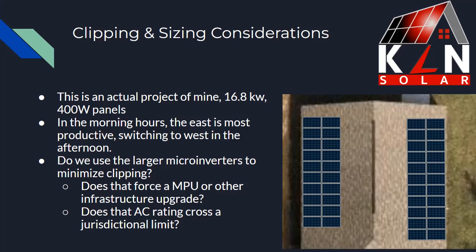In some places — I recently had a project in Colorado where AC ratings cross jurisdictional limits — if the system was above about 11 kilowatts, it was a wholesale net metering scheme; if below that, they got one-for-one. So now you have a trade-off using these same panels: what's more advantageous? If I use that lower AC rating, maybe I have a better net metering scheme and I don't need to pay for a main panel upgrade, but how much energy am I losing at the same time?